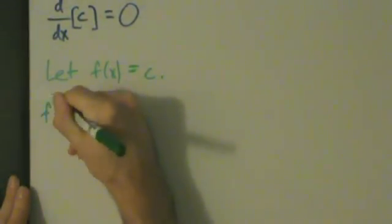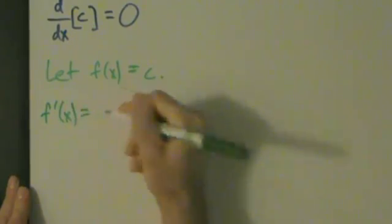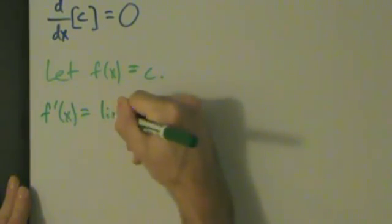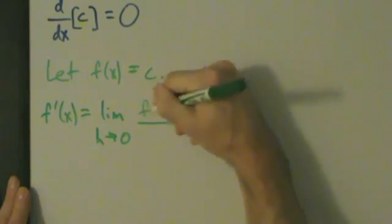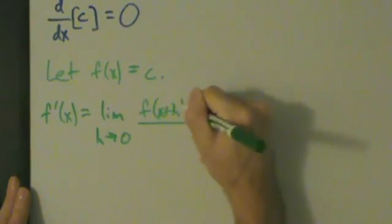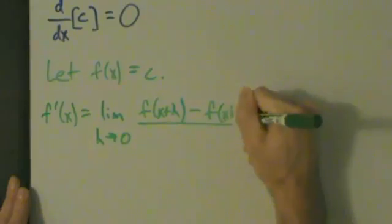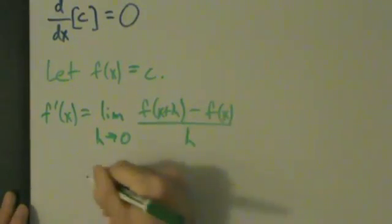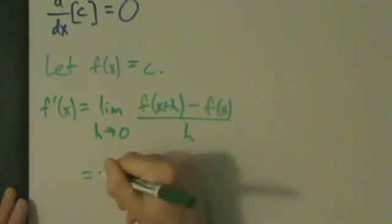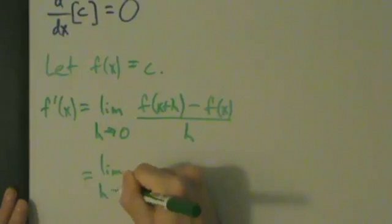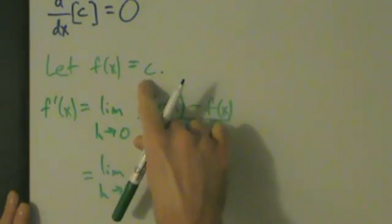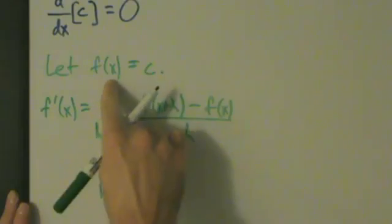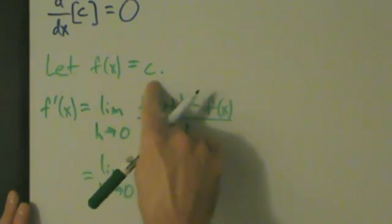Then the derivative f prime equals the limit as h goes to 0 of f of x plus h minus f of x all divided by h. So this equals the limit as h goes to 0 of what? Well, f of x is just a constant function, right? It's just c. So no matter what x is, it's always just going to be c.